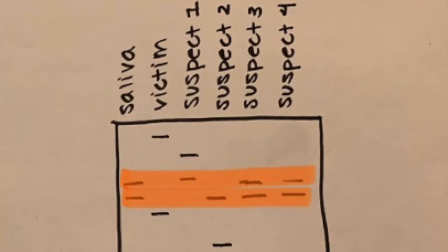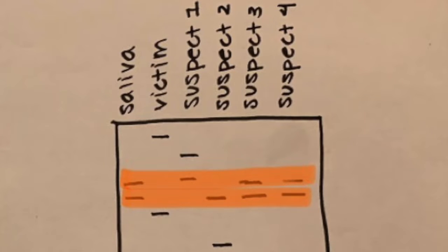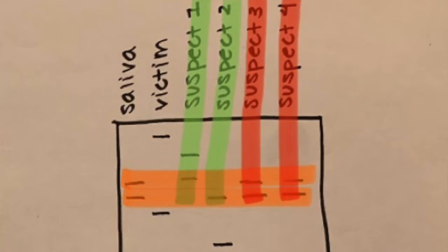The suspects that share the bottom band are Suspects 2, 3, and 4. So for locus 2, Suspects 3 and 4 share both bands with the saliva. Since both Suspect 1 and 2 only share one band with saliva at locus 2, they are not the ones who stole Tom's toy.